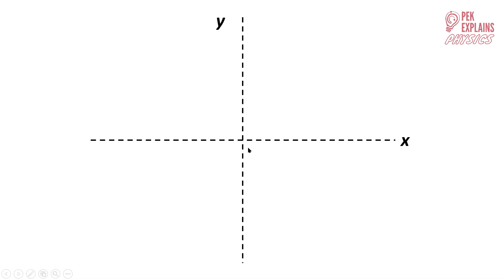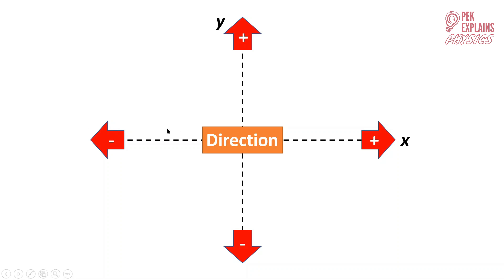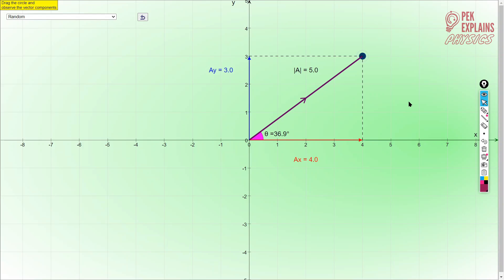Another very important thing about vectors is direction. We use positive and negative signs to determine direction. Direction to the right and upwards uses a positive sign, but direction to the left and downward uses a negative sign. So when calculating X and Y components: right is positive, left is negative; upward Y component is positive, downward Y component is negative.